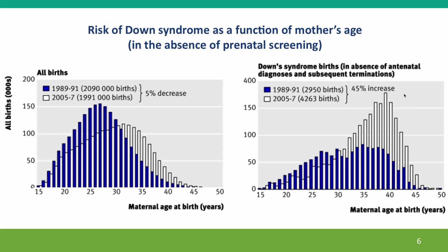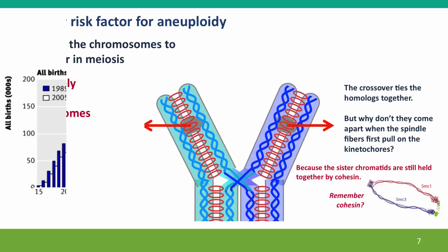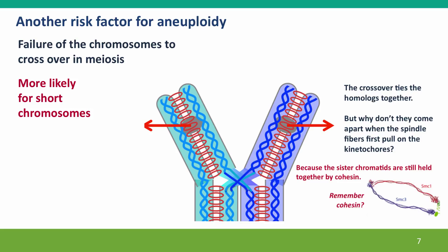This data is all in the absence of prenatal diagnosis and subsequent termination. So these are what you would see if women were not having abortions when they discover they're carrying a Down syndrome baby — but many women do, so that would change the actual numbers of births. Now, there's one more risk factor for aneuploidy that I should mention because it's going to come up in the next couple of lectures, and that is failure of the chromosomes to cross over in meiosis.